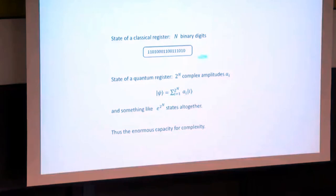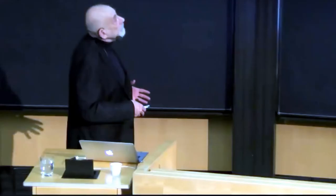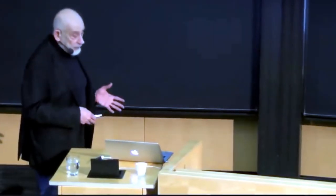Here the number of distinct classical states was 2 to the n. Here the number of corresponding quantum states is e to the 2 to the n. So the quantum states are vastly richer in their potential for complexity than the corresponding classical things.